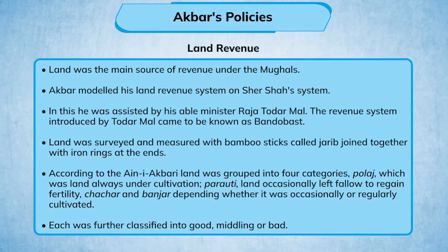Land was surveyed and measured with bamboo sticks called jarib, joined together with iron rings at the ends. According to the Ain-i-Akbari, land was grouped into four categories: Polaj, which was land always under cultivation; Parauti, land occasionally left fallow to regain fertility; Chachar; and Banjar, depending on whether it was occasionally or regularly cultivated. Each was further classified into good, middling, or bad.